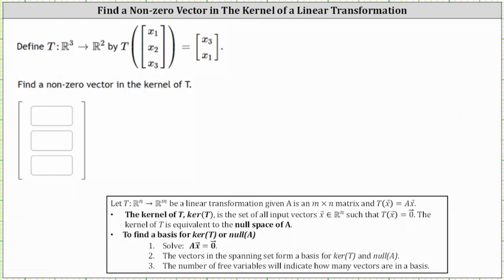We are given a transformation from R³ to R² defined by T of the vector (x₁, x₂, x₃) equals the vector (x₃, x₁). We're asked to find a nonzero vector in the kernel of T.